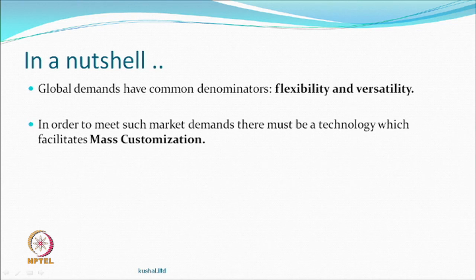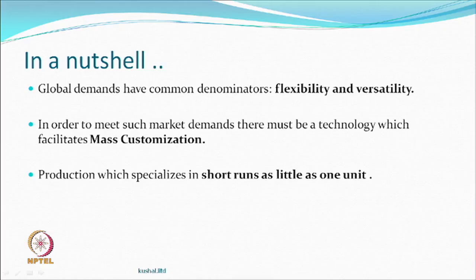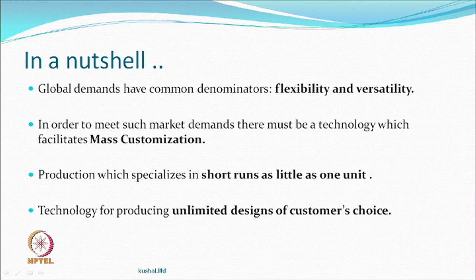Flexibility and versatility — how fast you can change and how many things you can do. This technology has the option of providing this type of flexibility and versatility. People were talking earlier of mass production, which is done to reduce the cost of any production. The fashion industry actually believes in mass customization: I want something for myself. This technology theoretically can offer to anyone anything they want as far as printing is concerned — 1,000 people want 1,000 different things. Short runs as little as one unit — no other technology can even think of offering that.